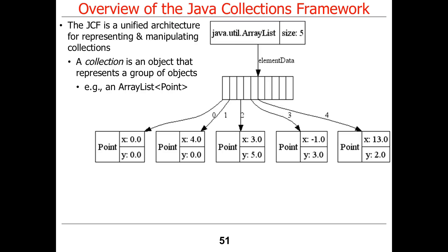A good example would be an ArrayList. Java has an ArrayList, which is basically an array or a list of elements. Each element in this particular case is whatever it's been parameterized with. Just like your second programming assignment, the one that has the generic interface, so too do the collections have generic interfaces. They're collections of type E, where E is an element, or type T, where T is a type.